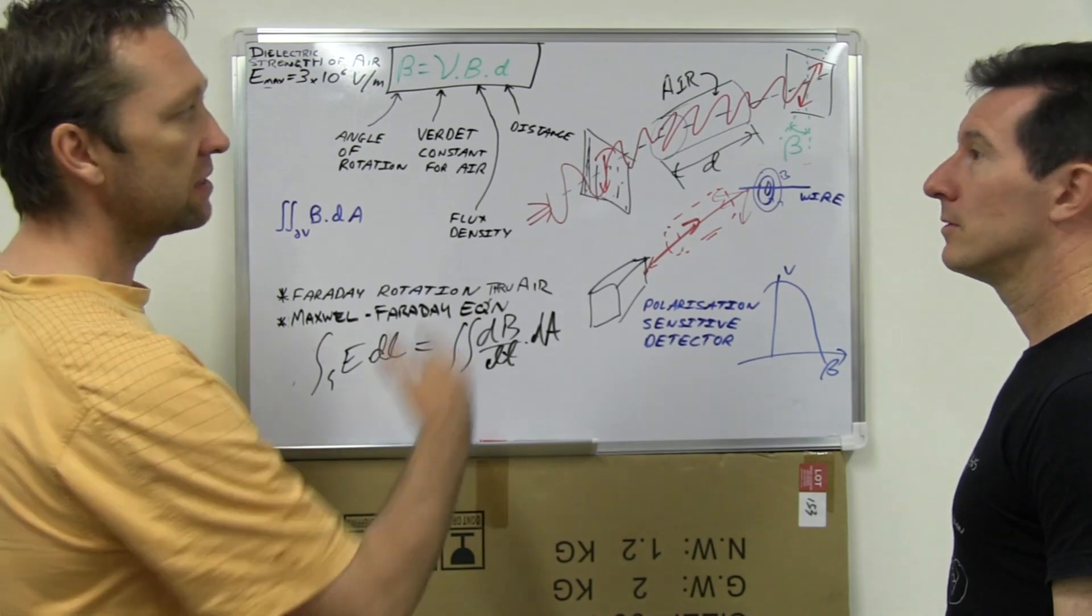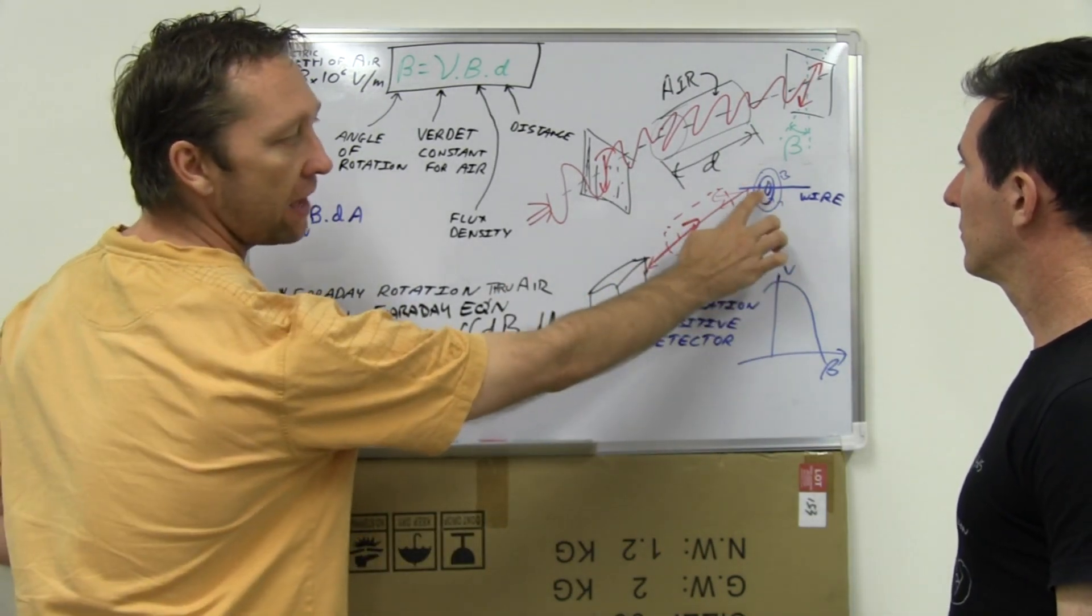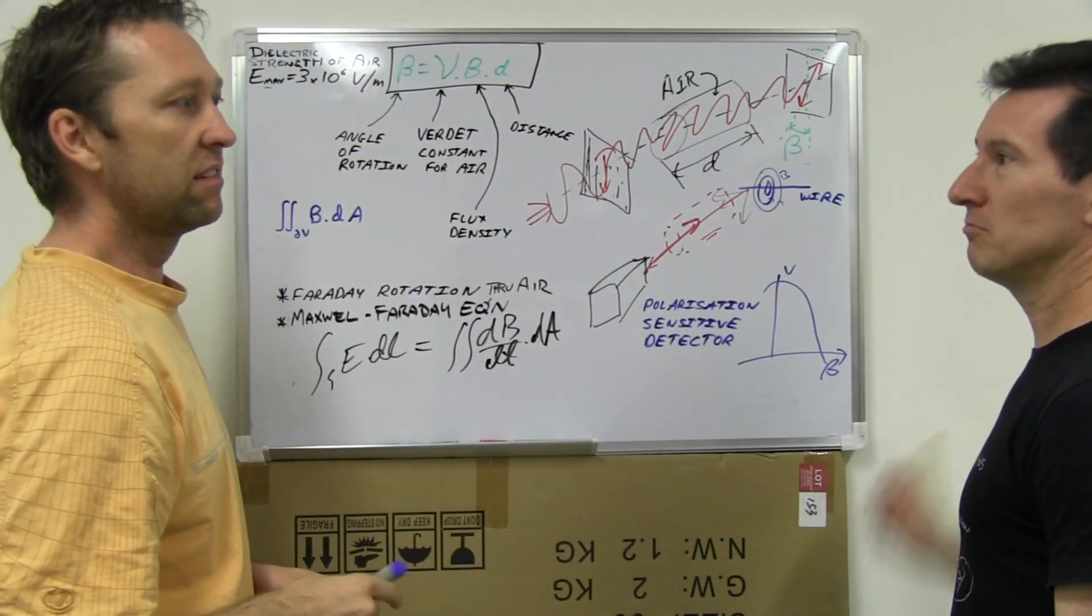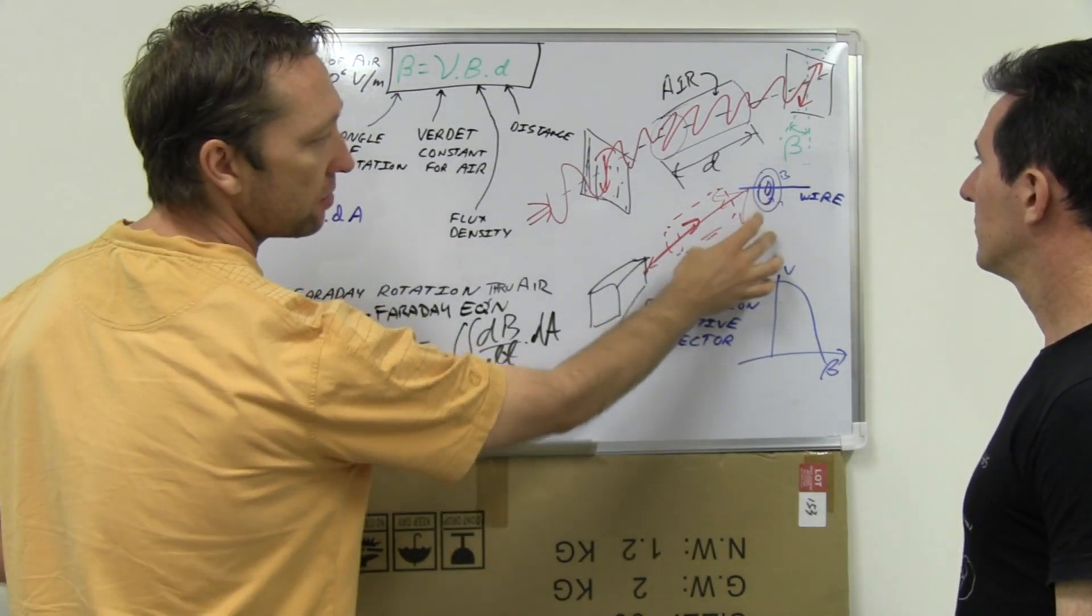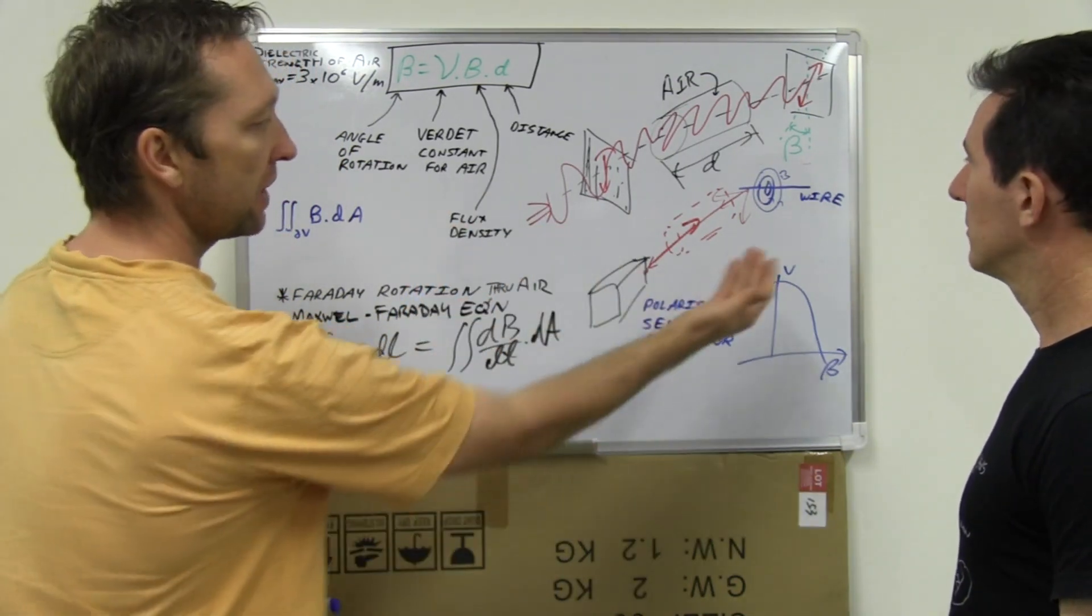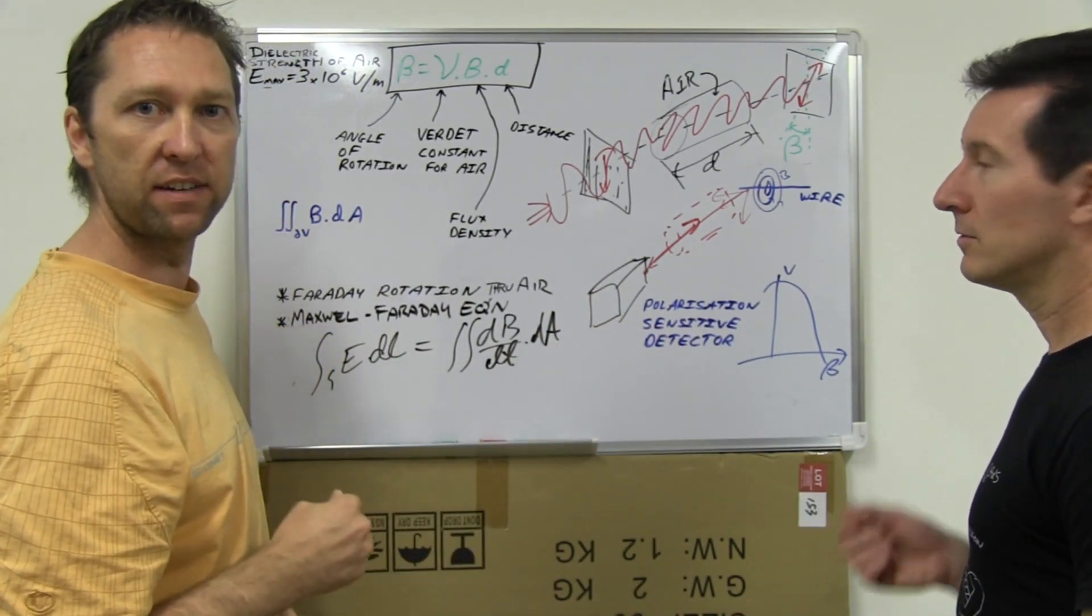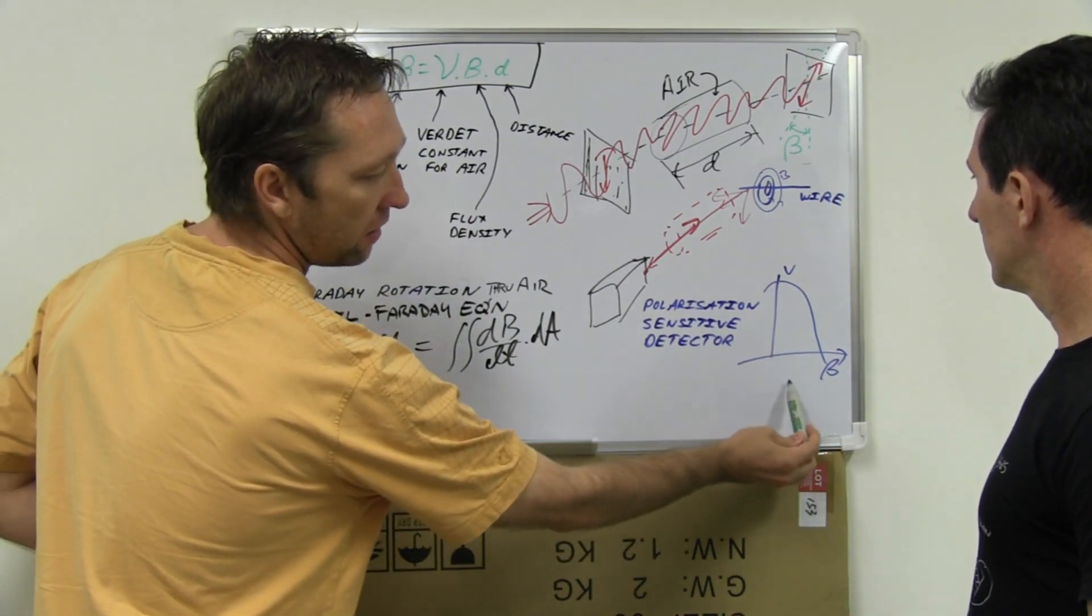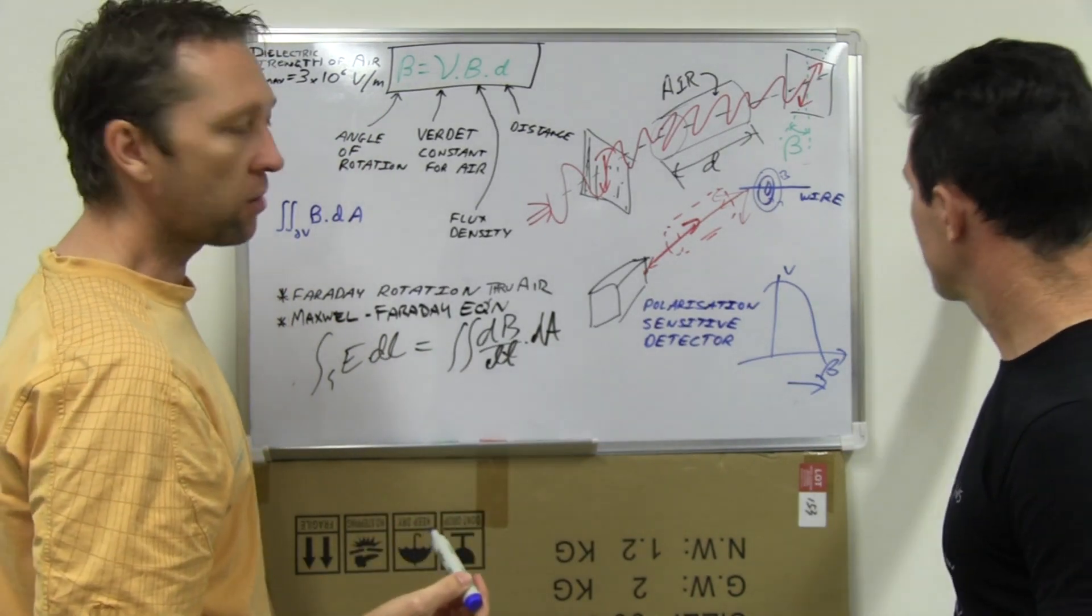So what they're probably doing there is they just shine their laser at their wire with the magnetic field. It could be a bus bar or it could be anything. Yeah, low voltage stuff, and the laser would get modulated passing through the field. And you get a small rotation in the polarization, so when it came back you would have a polarization sensitive detector which would have some relation like this: as you increase the rotation, your sensitivity decreases quite dramatically.